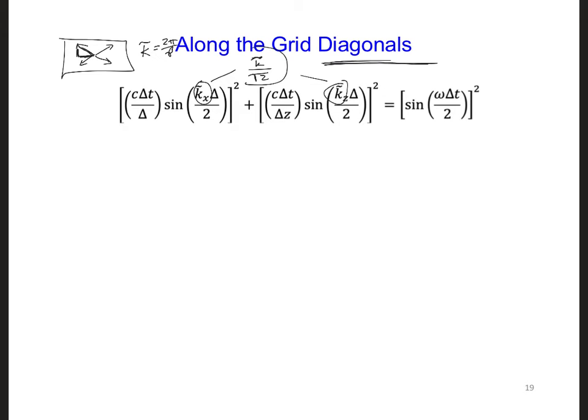So after plugging this in, this k for kx and kz, now both terms are equal to each other. So we can have 2 times c delta t over delta sine k tilde delta over 2 square root of 2. And the right side is the same.